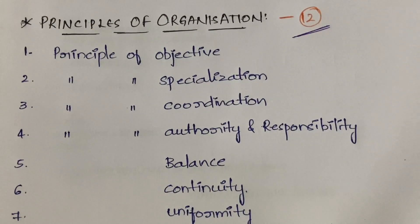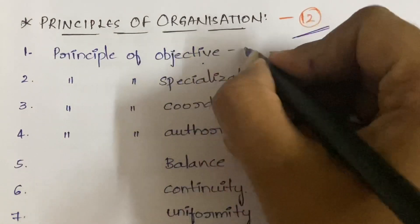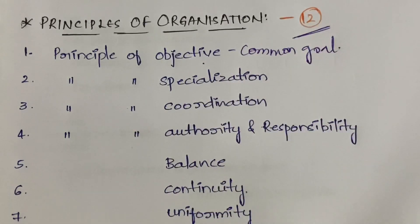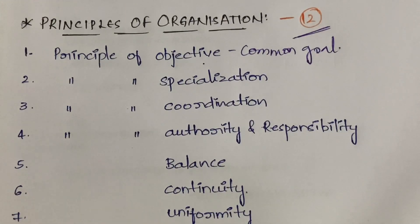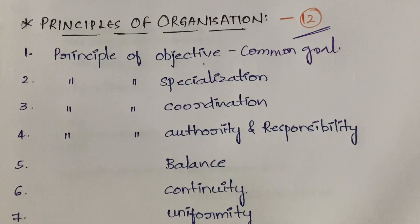The first one is the principle of objective. Every organization should have a common objective, or you can say a common goal, and the organization has to work towards achieving that goal. In an exam, don't just write the heading — elaborate. Write 'principle of objective' and then write that every organization should have a common goal and work hard to achieve it.